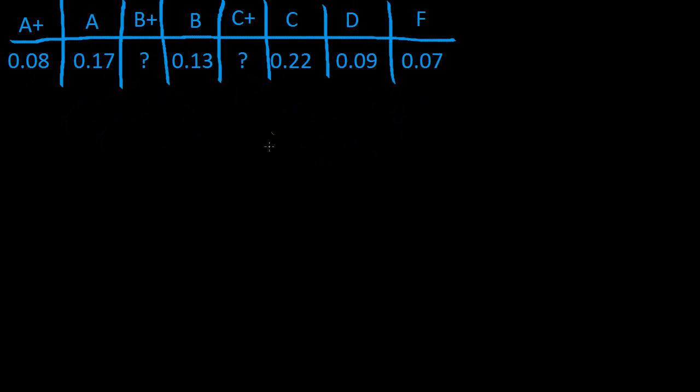So how would we go about finding the probability of a student getting something that's greater than C+? Let's say greater than or equal to C+. What is that probability?